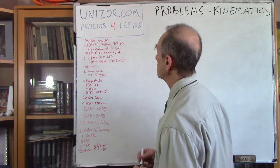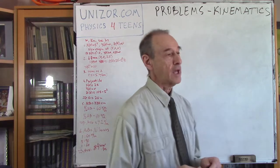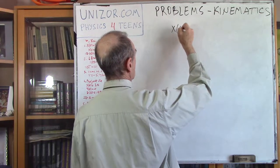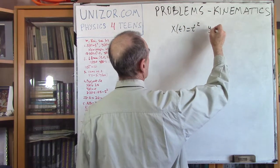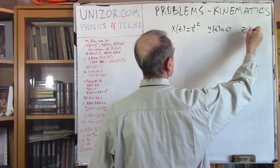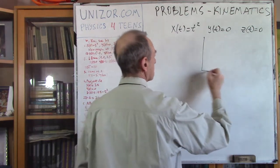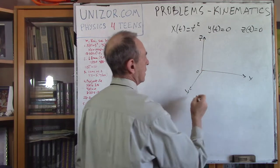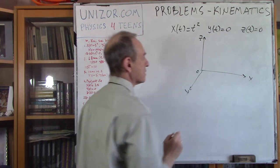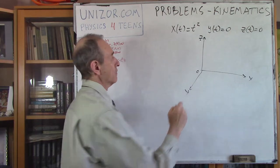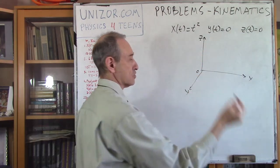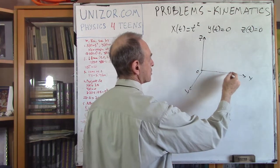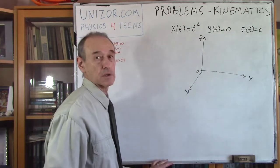My first problem: let's assume we have a certain object and it moves according to certain coordinate functions. x(t) is equal to t squared, y(t) is equal to 0, and z(t) is equal to 0. In this Cartesian system of coordinates, we are talking about movement only within the x-axis — so it's a straight-line movement. This is the way my distance from 0 is changing with time. At time t equal to 0 I'm at the origin, and I can put my position on this line at every moment by substituting the time into the formula.